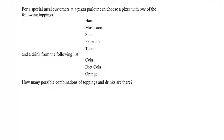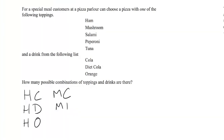Maybe we just start off with ham and write down everything that could happen with ham involved. So we could have ham and cola, ham and diet cola, ham and orange, and then move on to mushrooms. So we're going to have mushrooms and cola, mushrooms and diet cola, mushrooms and orange. From here you can probably already guess how many total combinations we're going to have.